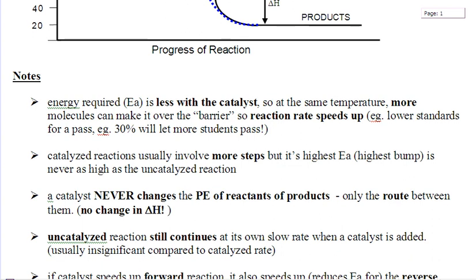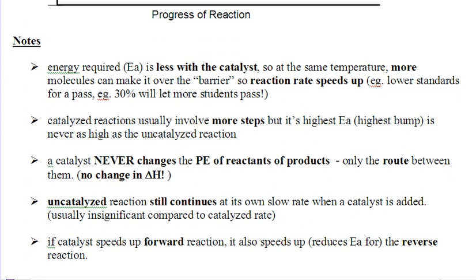So there are a few very simple points to fill in on your notes here. Energy required for EA is less with a catalyst, so it speeds up the rate. It usually involves more steps, but it doesn't always have to. This third point is huge. A catalyst never changes the potential energy of the reactants or products, only the route between them.